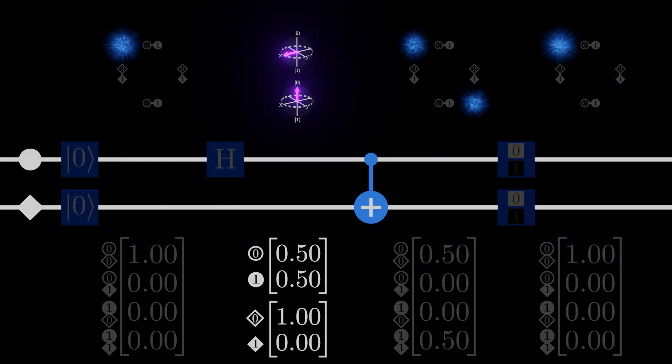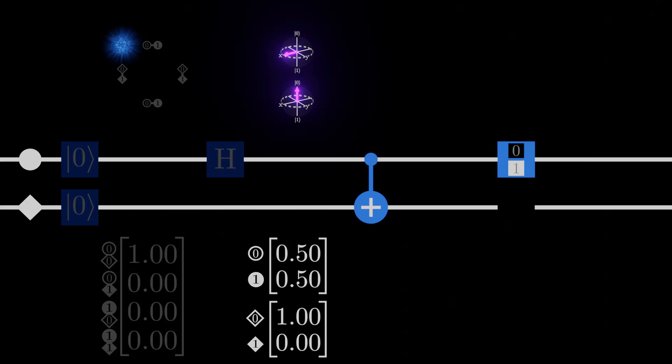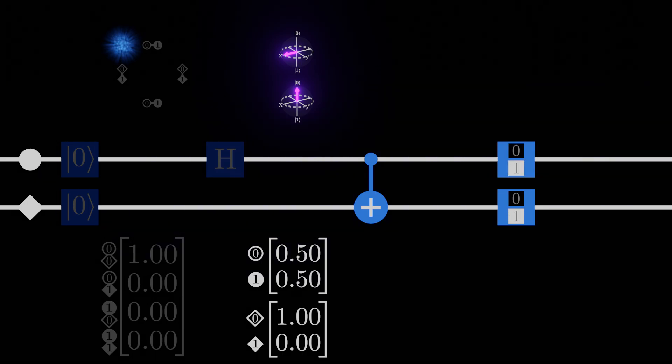However, once the qubits pass through the controlled-not gate, this kind of explanation stops working. If we go on to measure each qubit individually, you might be fooled into thinking that each simply has a 50-50 chance for each measurement. It's only when we look at both the measurements together that we notice an additional piece of information.